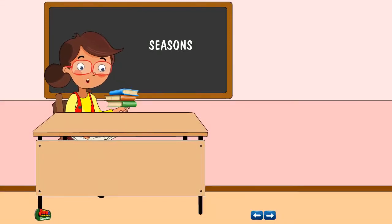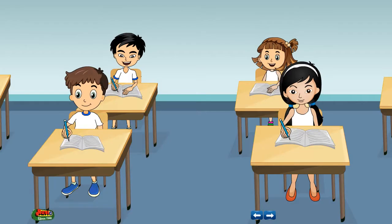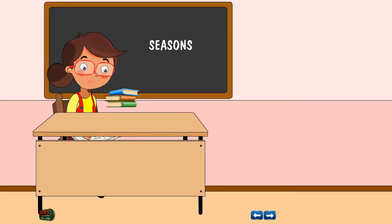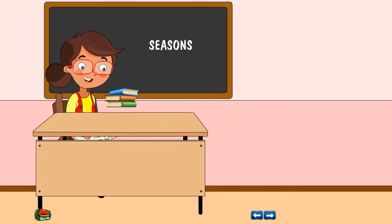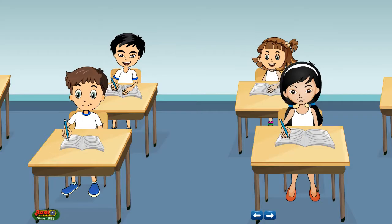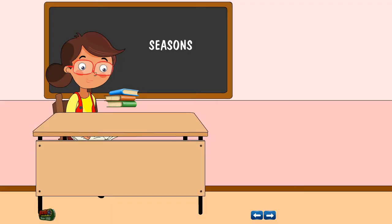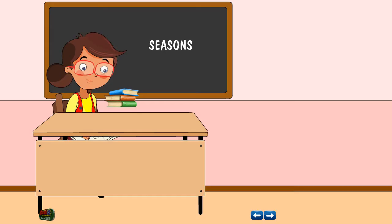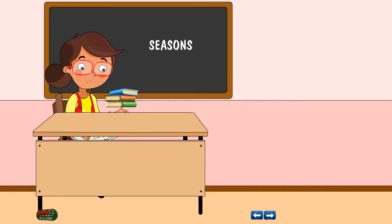Hi children! Seasons are marked by changes in weather, ecology and hours of daylight. Seasons are caused due to intensity of sunlight that reaches the earth's surface. Do you know what is the name of the season running now? Let us learn about different seasons.